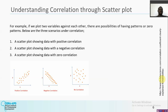We can understand correlation through scatter plots. A scatter plot is a graph where you plot two variables against each other — for example x and y. You cannot plot more than two variables on a scatter plot; you cannot plot three variables like x, y, z on one scatter plot. You can only plot two variables, such as x and y, or y and z, or a and b. There are three possible types of correlation when we talk about scatter plots.